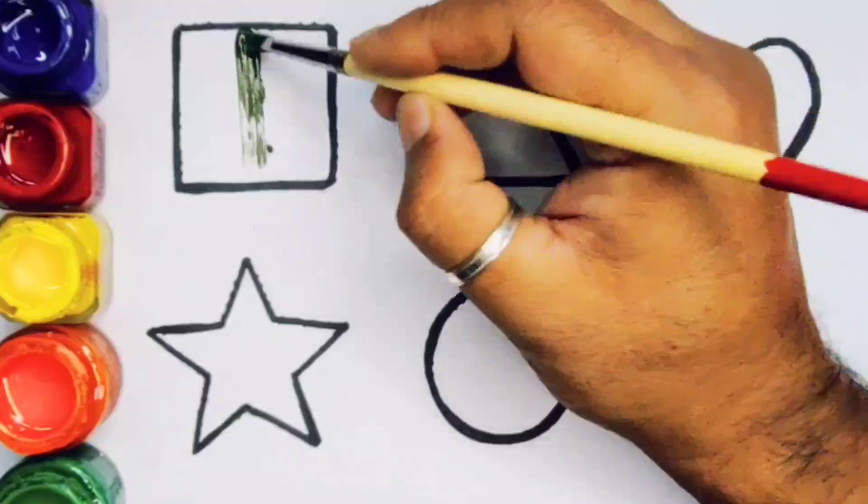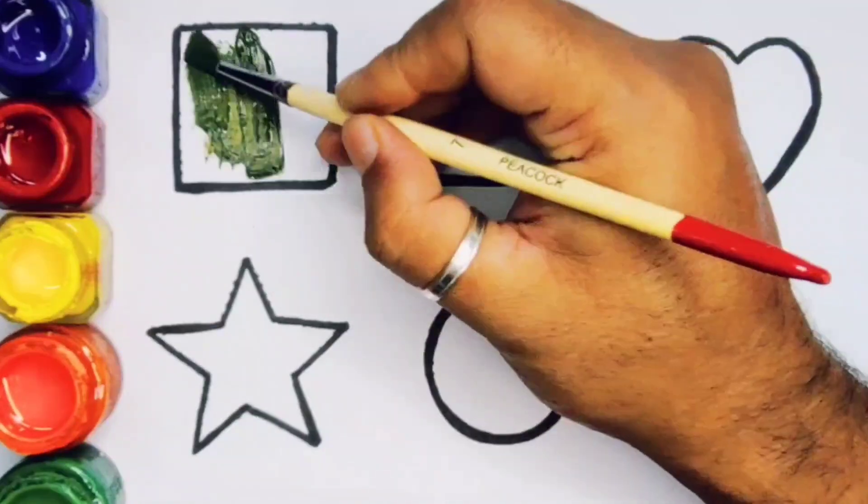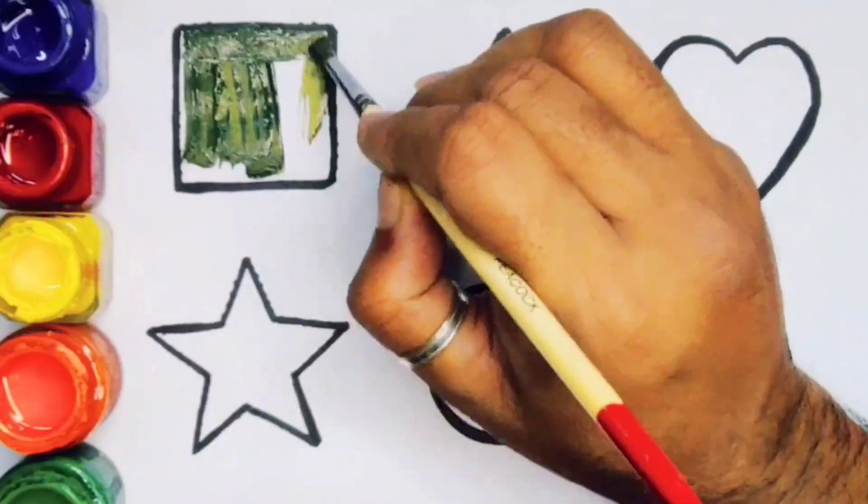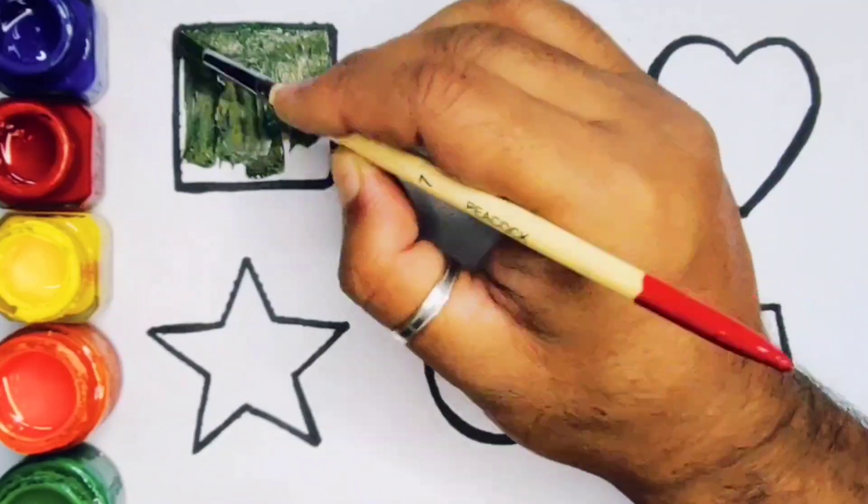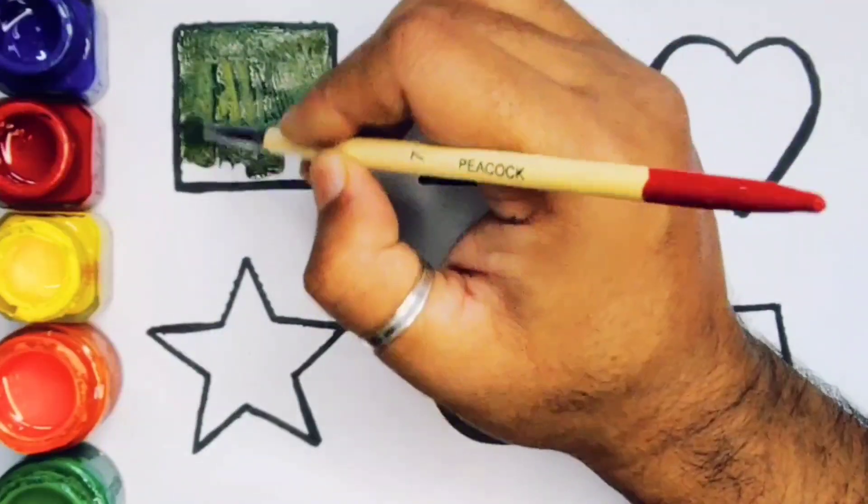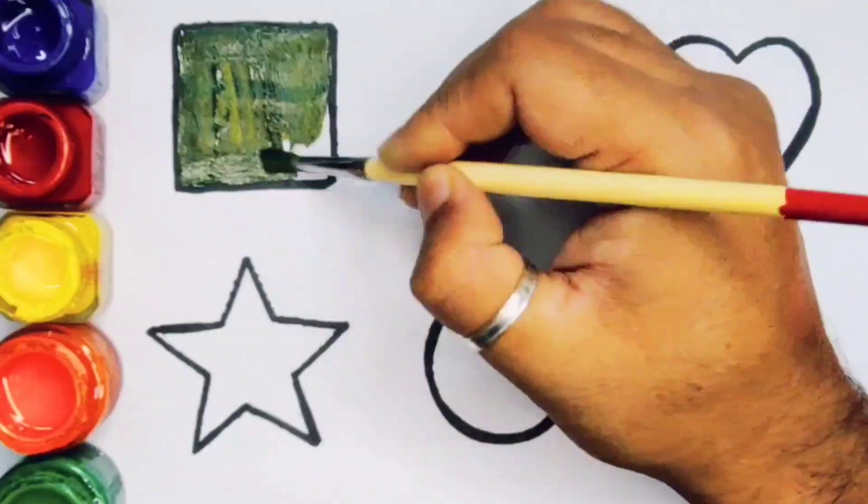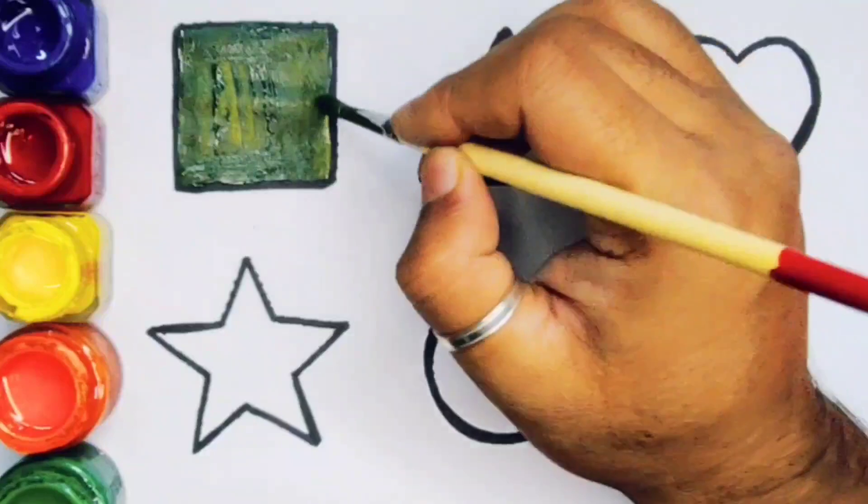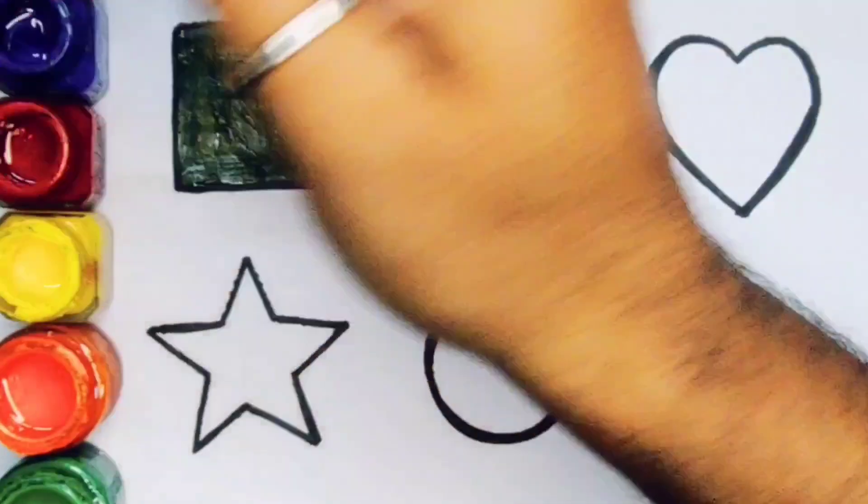Now we are going to put the color. Olive color. Square. Next.